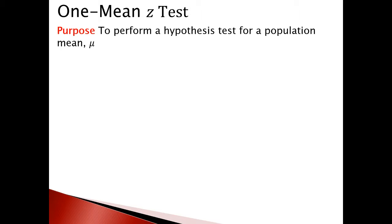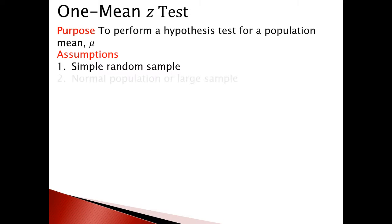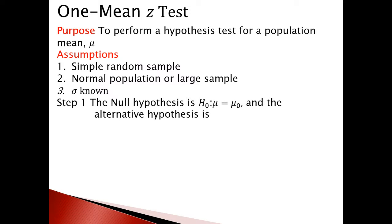There are three assumptions. The first assumption is simple random sample. The second assumption is normal population or large sample. The third assumption is that sigma is known. The one mean Z-test consists of several steps.